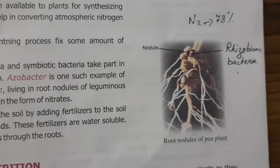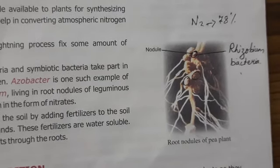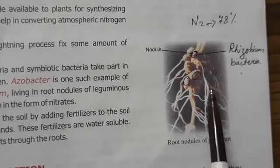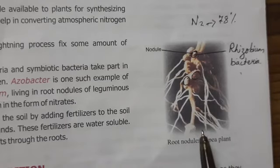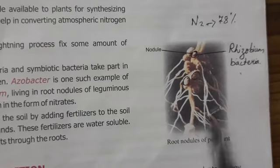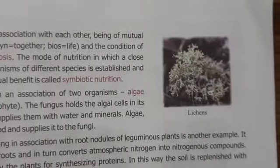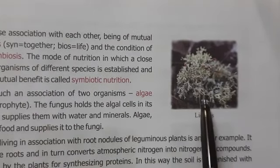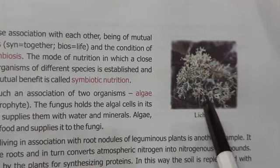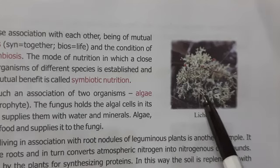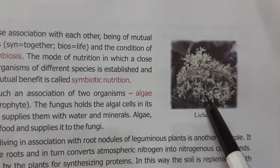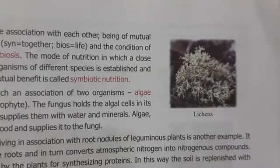I hope that both examples — the rhizobium and leguminous plant relationship, and lichen which is a combination of algae and fungi — are clear to all of you. With this, we have completed heterotrophic nutrition.